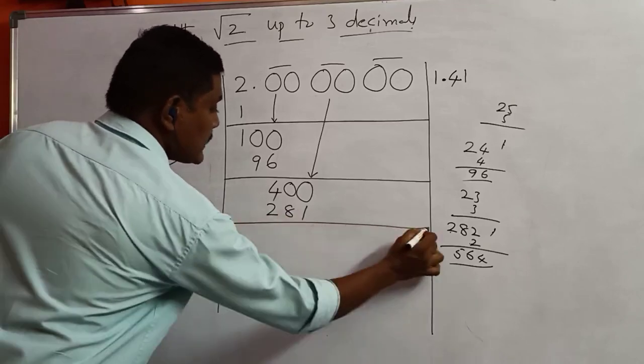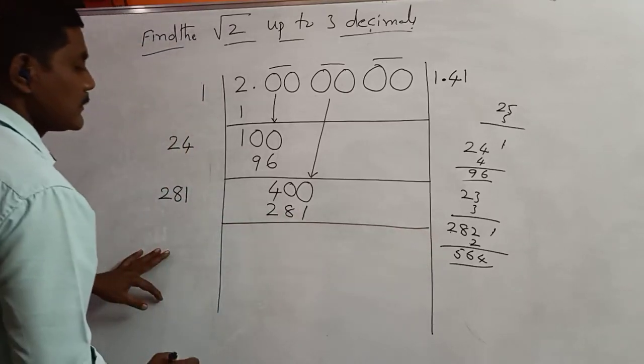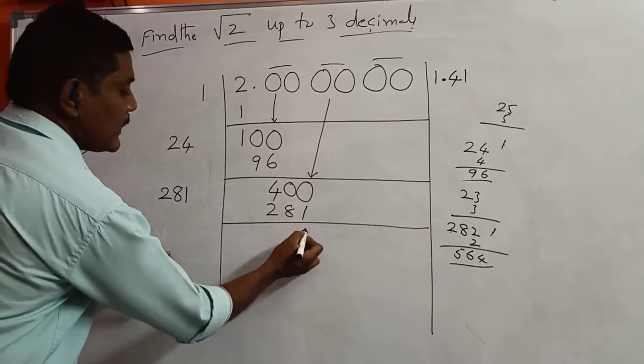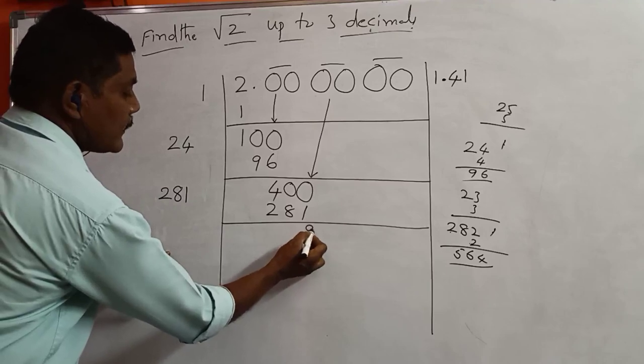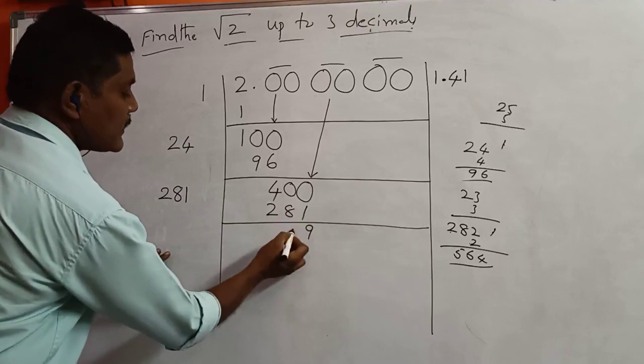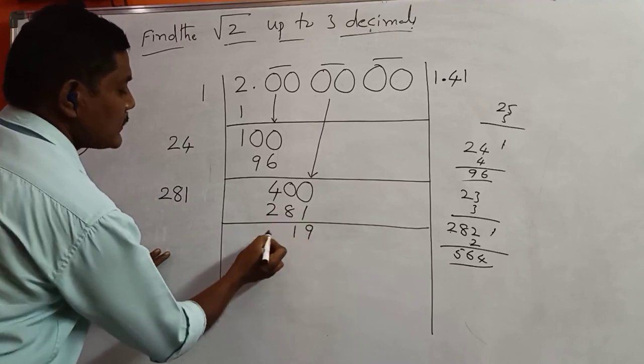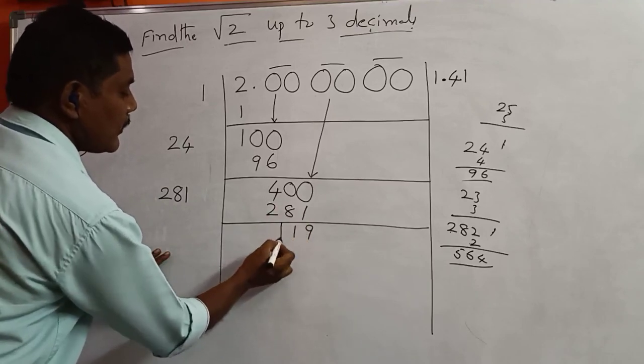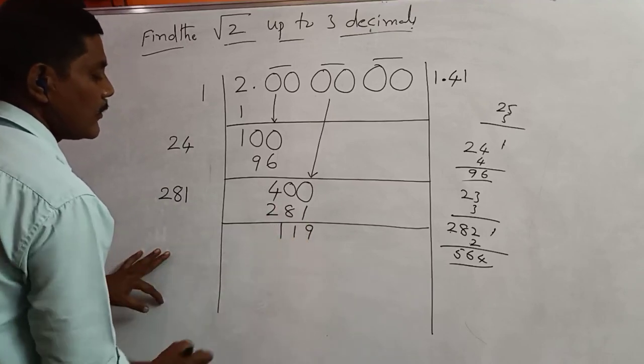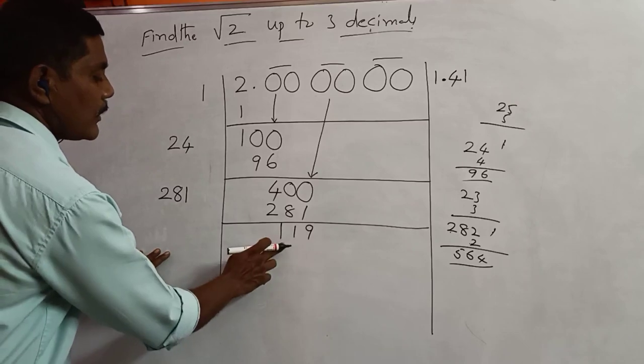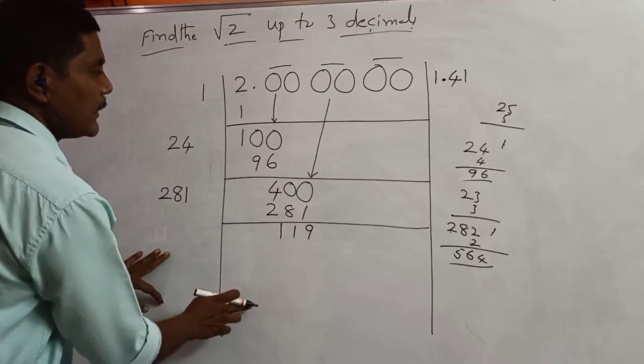Subtracting: 11900 minus 11296 equals 604. This gives us the remainder. Write down the next pair of zeros.